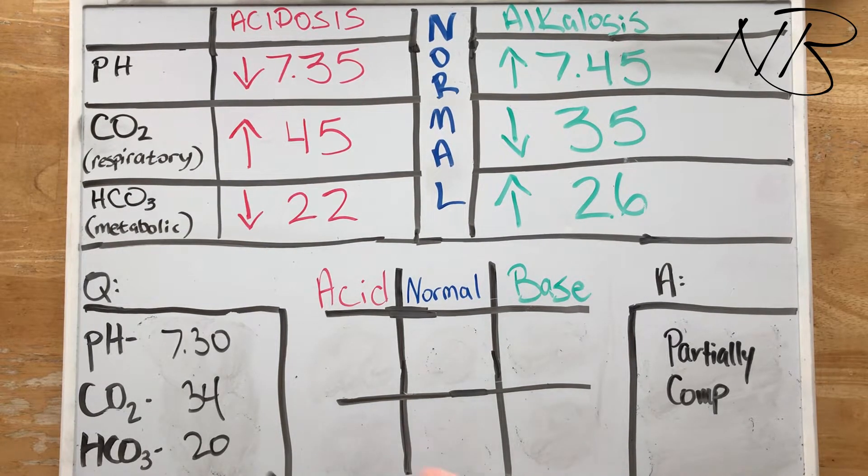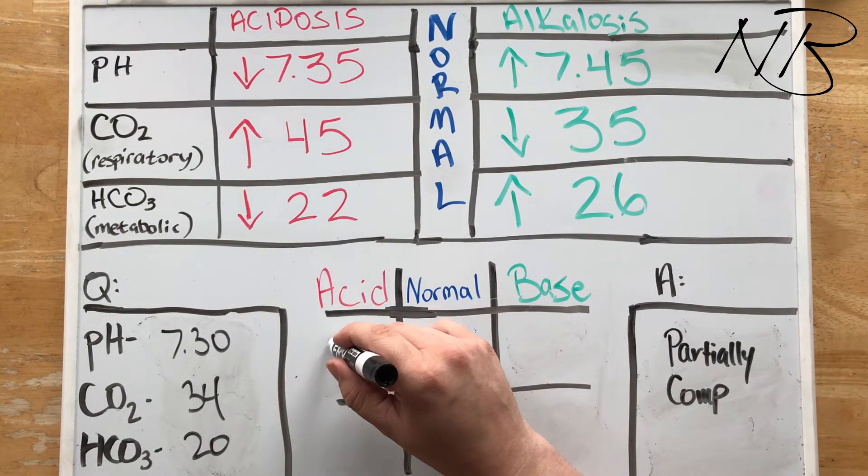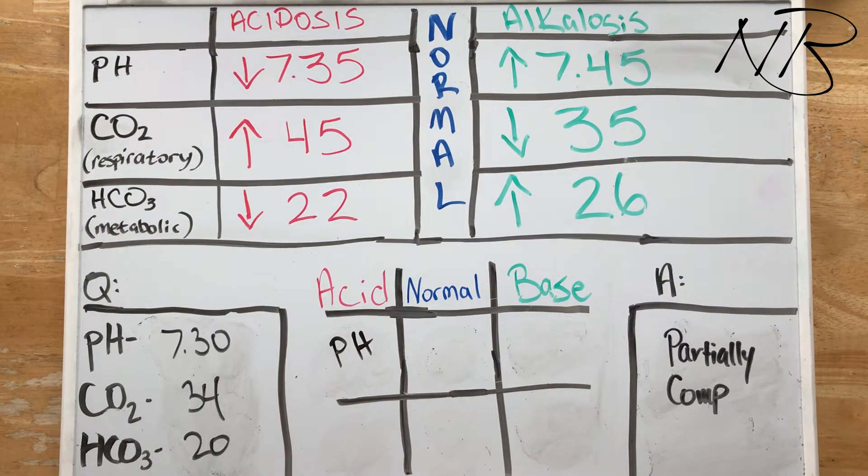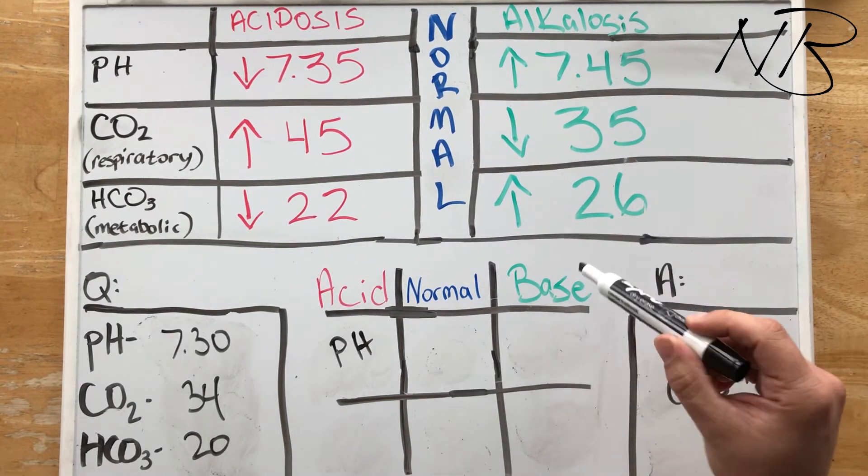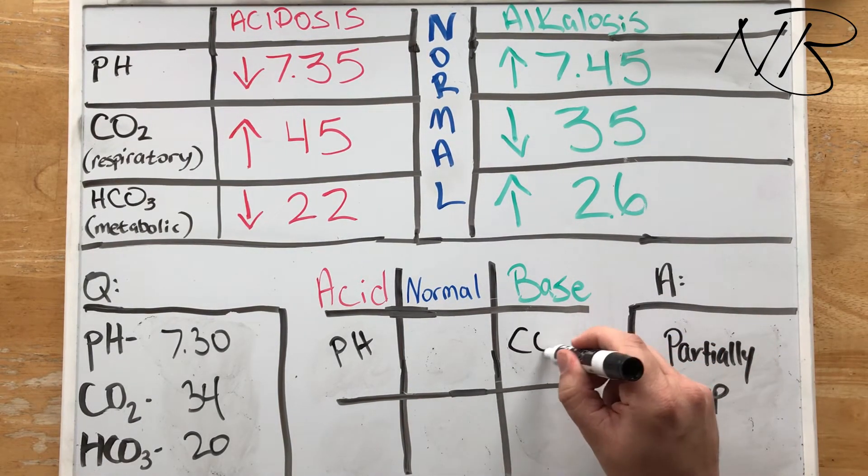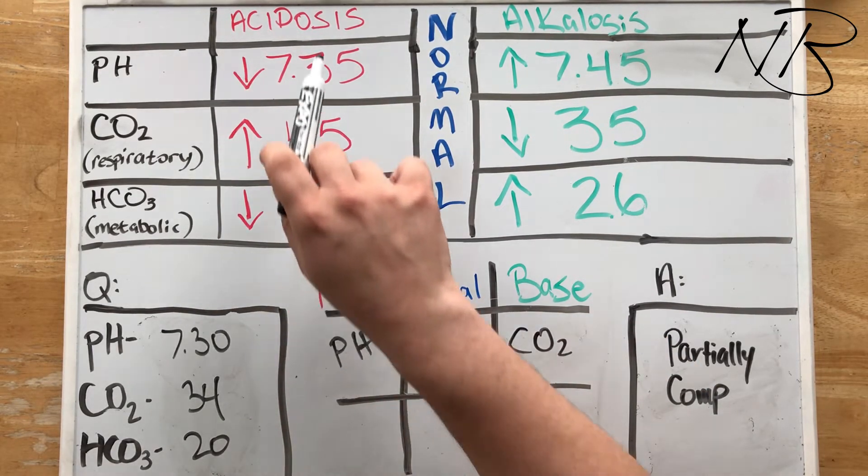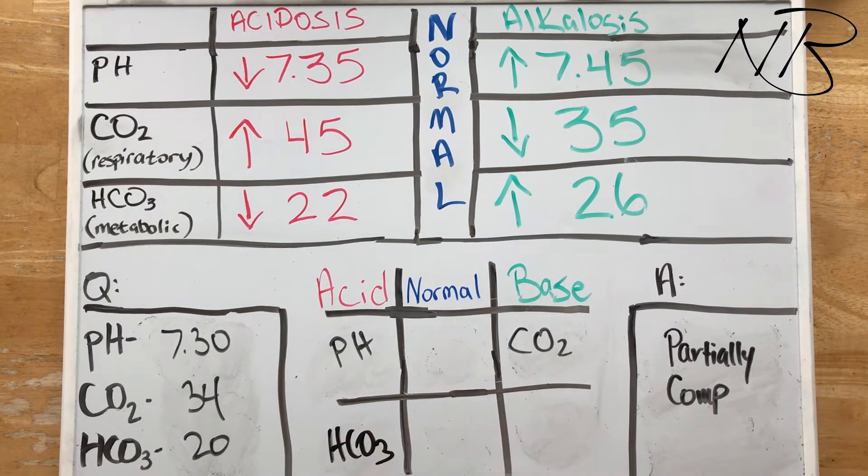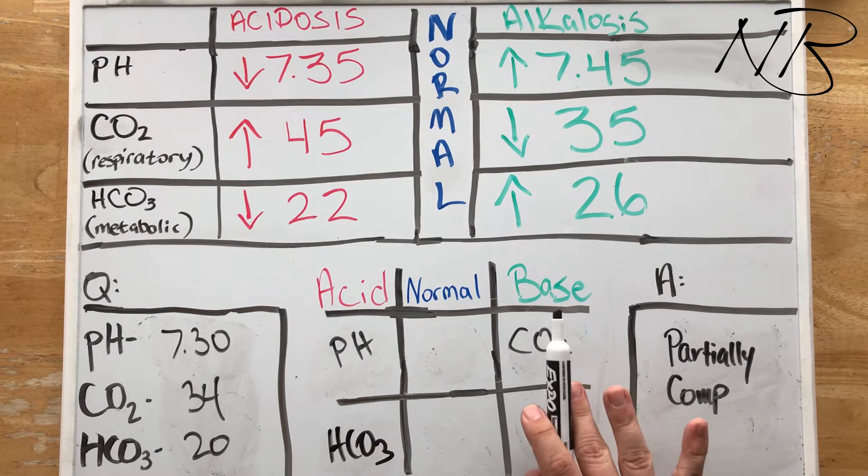In this next one here, we have a pH of 7.3. So our pH is less than 7.35. That's going to go in our acidotic column. CO2 is 34. 34 is less than 35, so that'll go in our alkalotic column. And then our bicarbonate is 20, which is less than 22. That's going to go in our acidosis column as well.